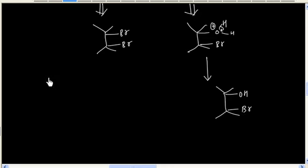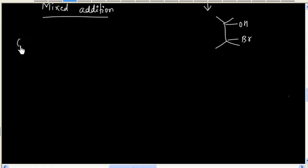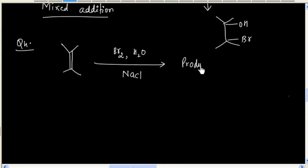Now this kind of addition is called mixed addition, because we have more than one nucleophile present in the solution. For example, if we treat this alkene with bromine in water and the solution also contains NaCl, what are the possible products in this reaction?